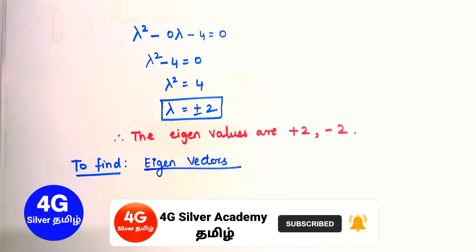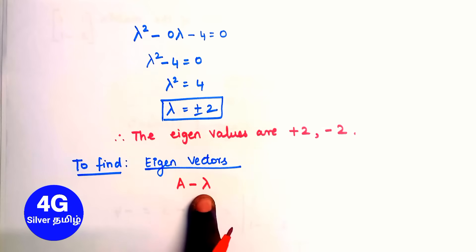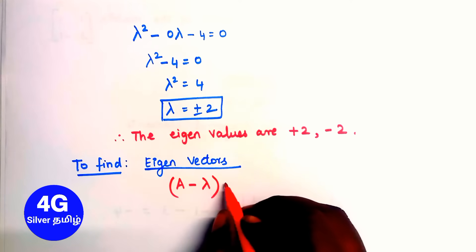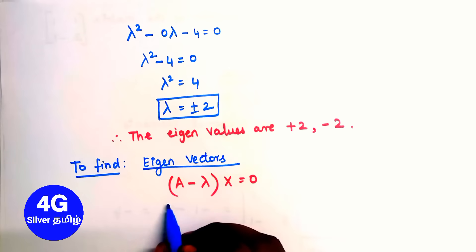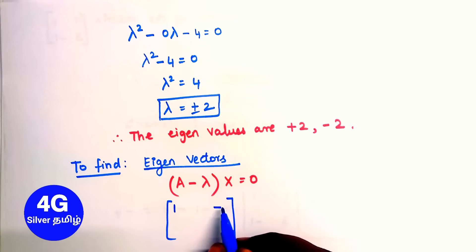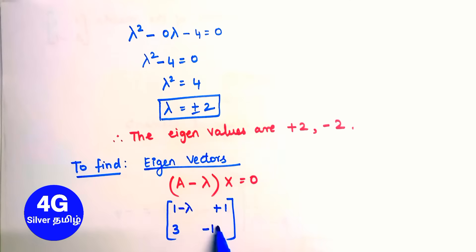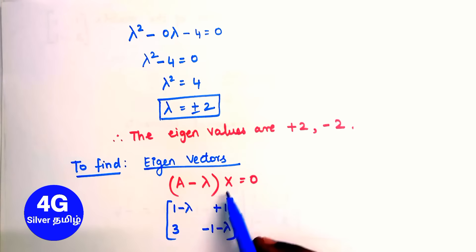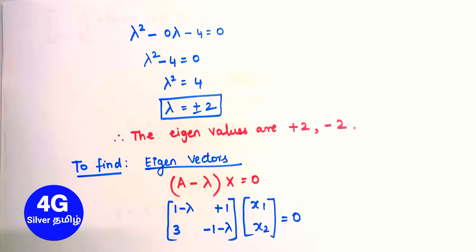Next we find the eigenvectors. To find the eigenvectors we use (A minus lambda I) times x equals 0. Matrix A is [1, 1; 3, -1], and we subtract lambda from the diagonal elements. This gives (A minus lambda I) times [x1, x2] equals 0.